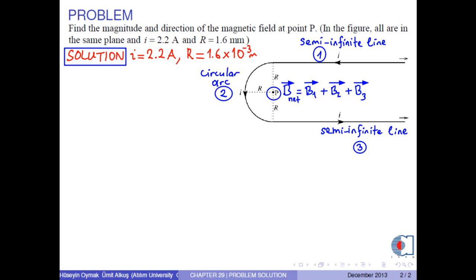As you remember, the magnetic field due to semi-infinite line is mu 0 times i over 4 pi r. Its direction is out of the screen.